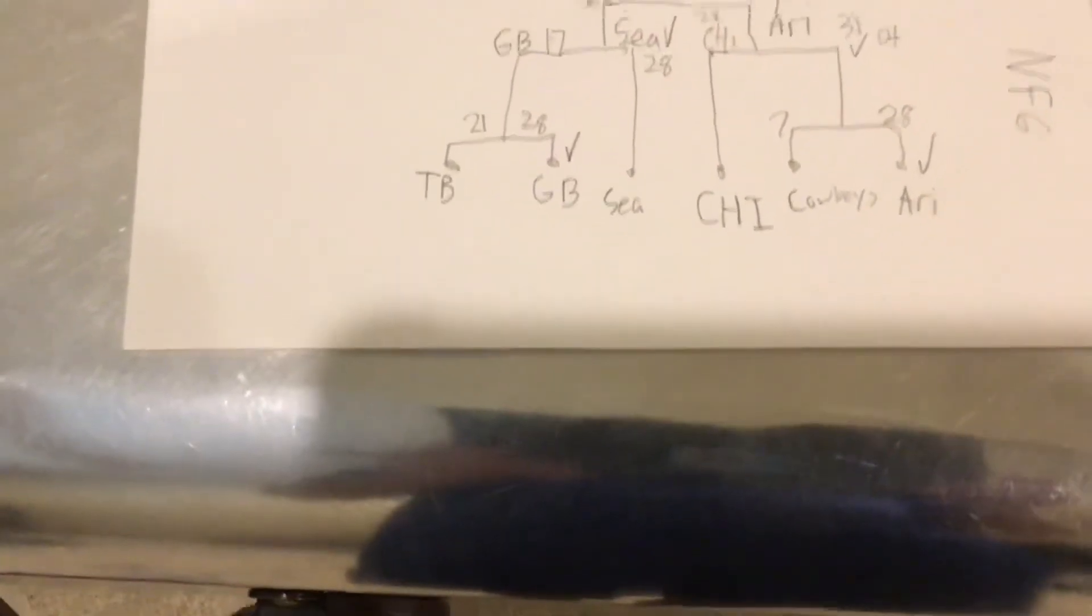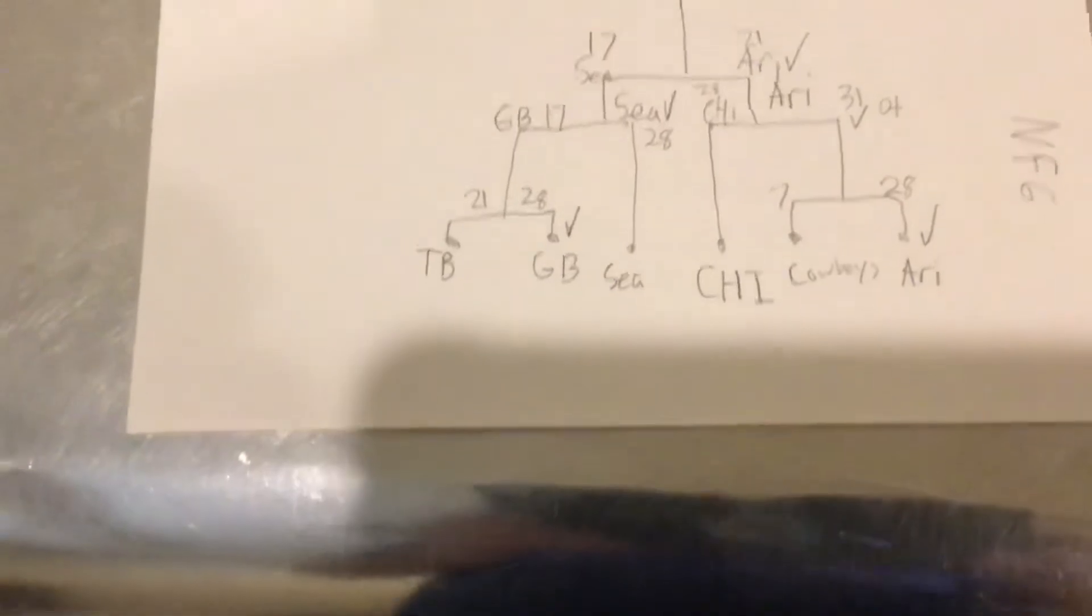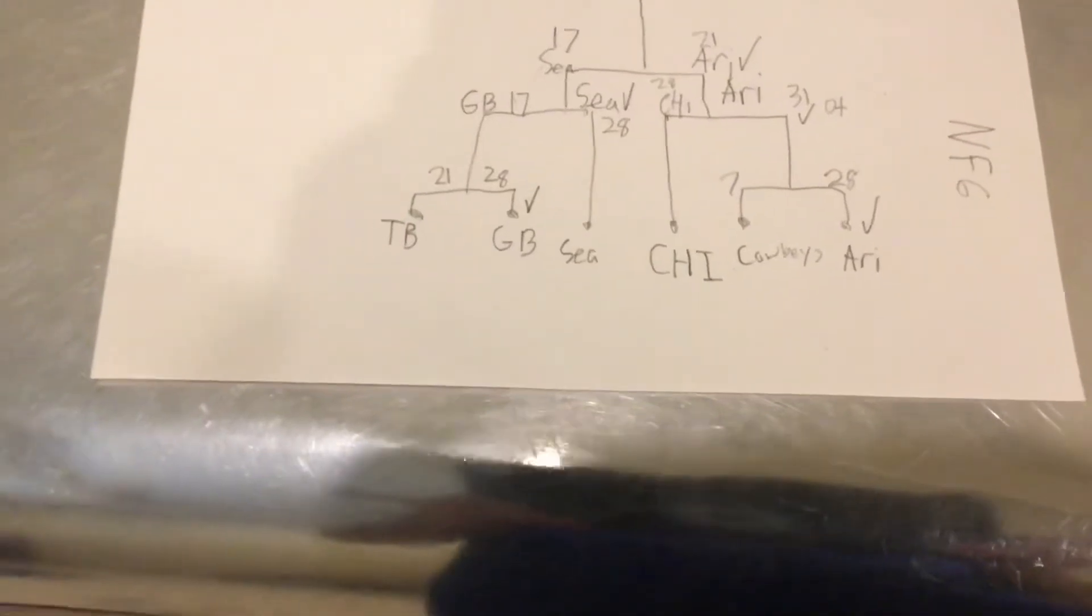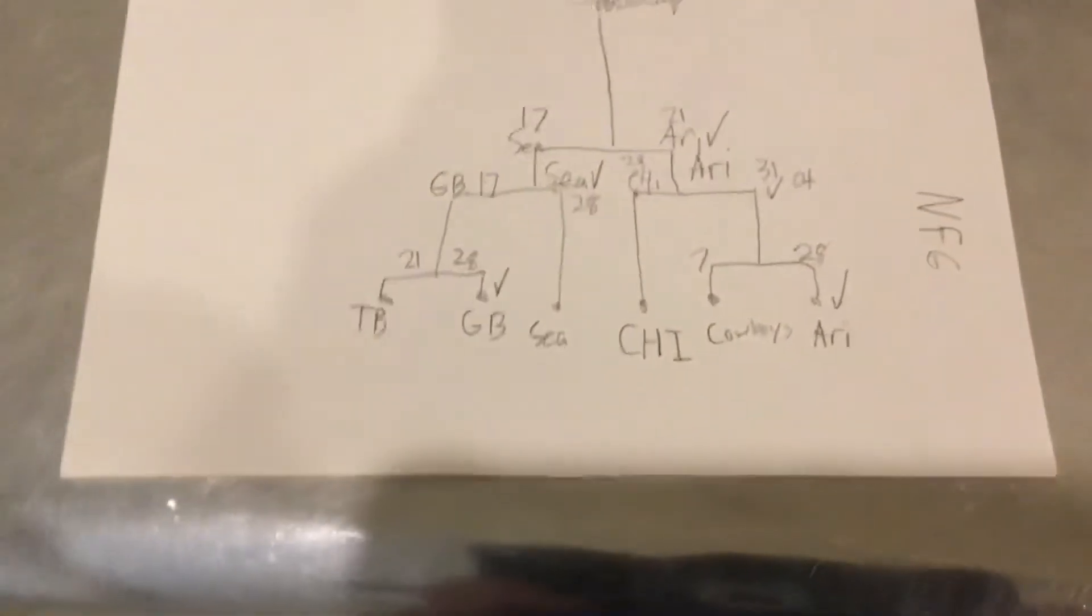Then on the NFC side, Green Bay will face Tampa Bay. Green Bay will win 28-21 in an upset. Seattle will face Green Bay, and Seattle will win 28-17.